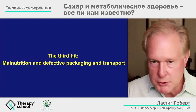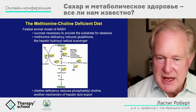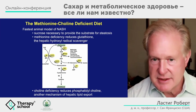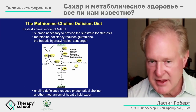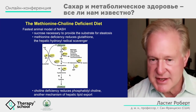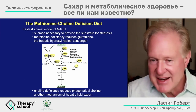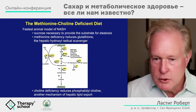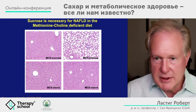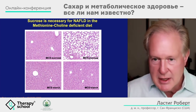The third hit: malnutrition and defective packaging. There is a model of fatty liver disease called the methionine-choline deficient diet. Methionine is an antioxidant needed to generate glutathione — so methionine deficiency leaves you vulnerable. Choline is necessary to make phosphatidylcholine, which is needed to make ApoB100 to transport fat out of the liver. In methionine-choline deficient animals treated with starch or sugar, starch does nothing, but sugar causes fatty liver disease and cell death.